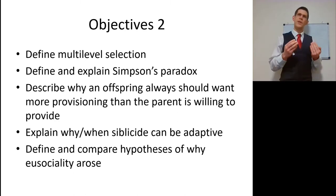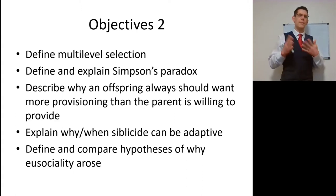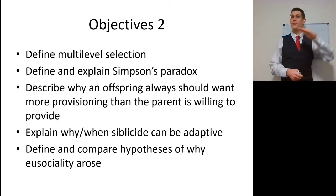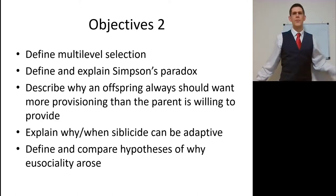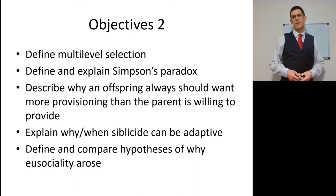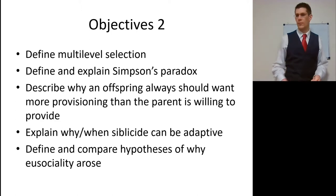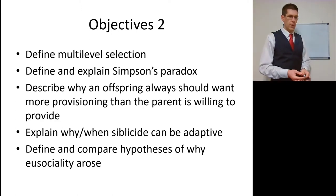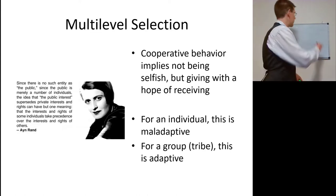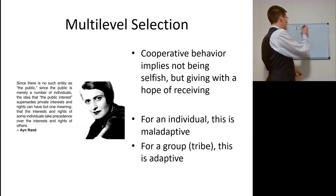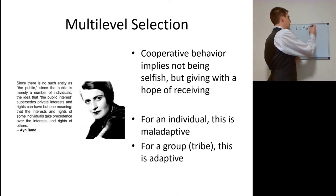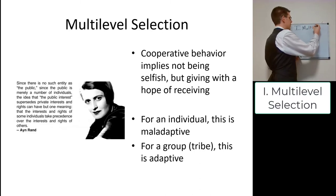We'll discuss why provisioning that amount of work was not only good for you and others like you, but also good for the people who cheated or just surfed along. We'll describe why an offspring always should want more provisioning than a parent is willing to provide, explain why and when siblicide can be adaptive, and define and compare hypotheses of why eusociality arose. Today's lecture is on multi-level selection and some odds and ends of kin selection.